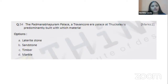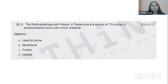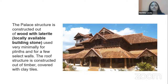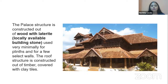The Padmanabhapuram Palace at Thuckalay is predominantly built with which of these four materials: laterite, stone, sandstone, timber, or marble? The palace is one of the largest wood and stone constructed palaces in India — specifically the largest wooden palace. Both laterite (the stone used) and timber (the wood used) are the two major materials. So both options, laterite and timber, are correct for this question.